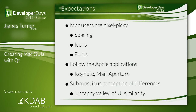Mac users are pixel-picky. They care about one grey line in the wrong place, one bit of transparency that doesn't look right — spacing, icons, fonts, all visual details. The problem is they don't really know what they want. They've got in their head and subconscious an idea of what the Mac is to them, picked up from using Safari, Keynote, Apple Mail, Aperture, Pages, and just the OS. That's built into their brains. When they use a Qt app by default, it feels subtly wrong.